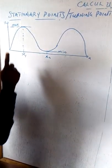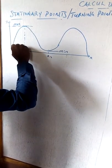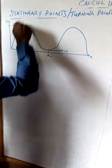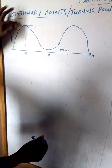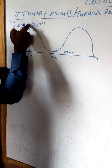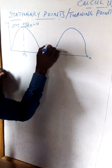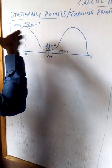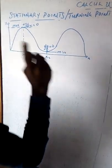The stationary point is the point at which a moving point on a curve reaches a maximum or minimum. At the maximum point, the derivative dy/dx is zero. Similarly, at the minimum point, dy/dx is also zero. That is why these are called stationary points — because at these points, there is no movement in the slope or gradient.